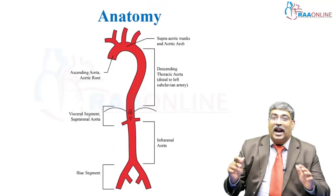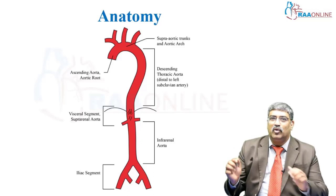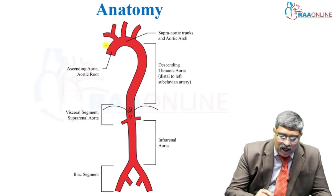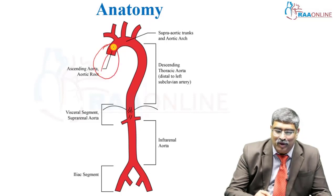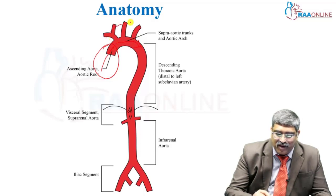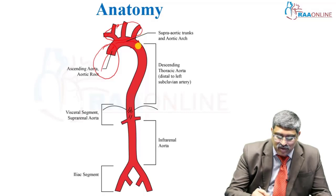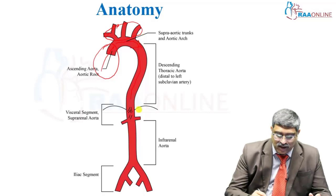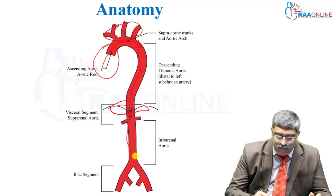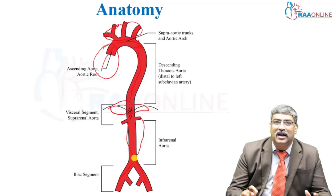With that background, let us move into the anatomy of the aorta. The aorta originates from the left ventricle as the ascending thoracic aorta, then continues as the arch of the aorta, where it gives rise to the cerebral vessels. It then continues down as the descending thoracic aorta, pierces the diaphragm, and enters as the abdominal aorta before bifurcating into the iliac arteries.